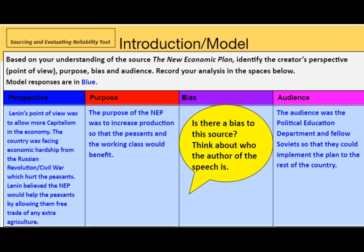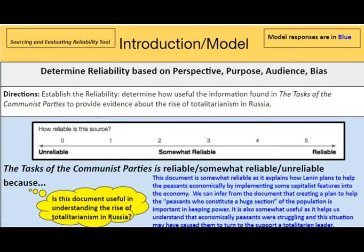I know this is going back a bit. We took apart a source and broke down a source. We looked at the different color coding for perspective, purpose, bias, and audience, then gave a model for the rating. But let's say your teacher asks you to do it on your own. What would you do? What language would you use if you had to speak about the author's perspective?